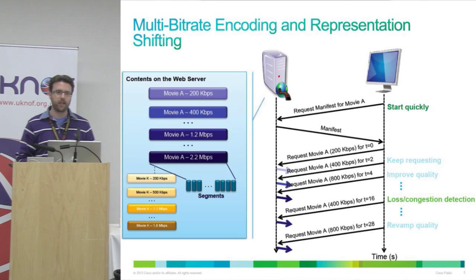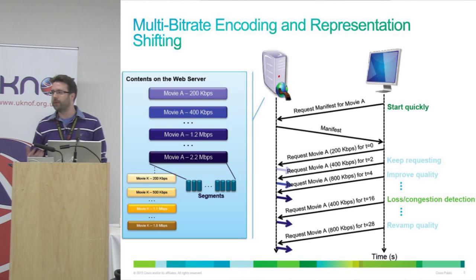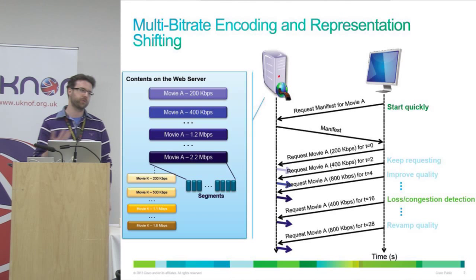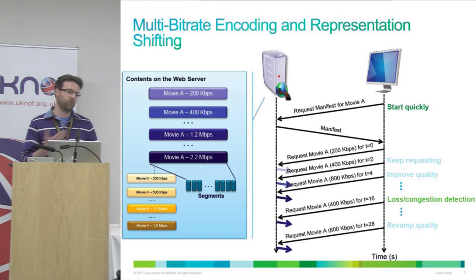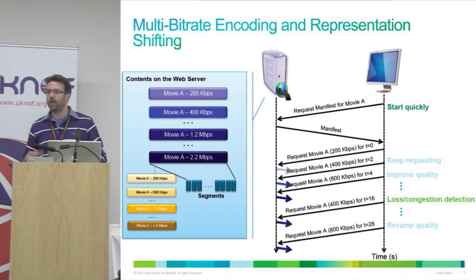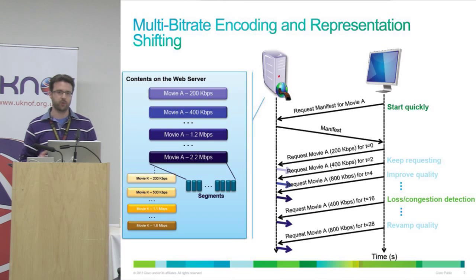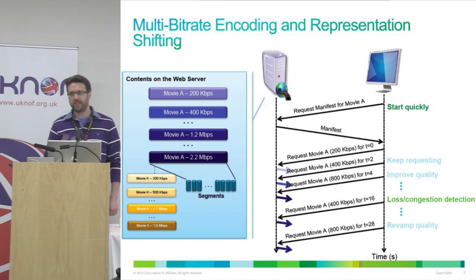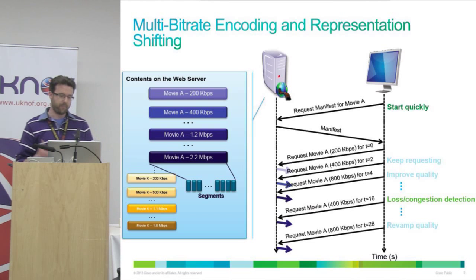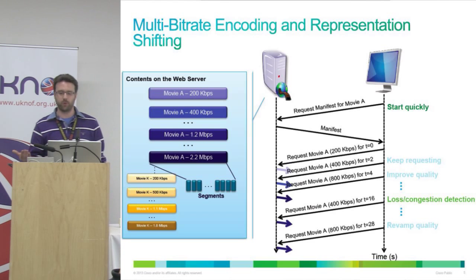We've moved to a world that is slightly better: multi-bit rate encoding and representation shifting. Simply because we have mobile devices and all sorts of underlying technologies for delivering content — whether over DSL, Wi-Fi, FTTH, or whatever you might have — we segment programs into multiple speeds at different bit rates. Depending on the available bandwidth at that point in time, you would jump from one to the other.